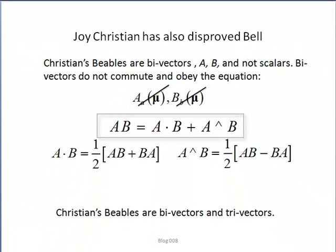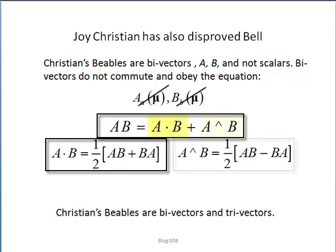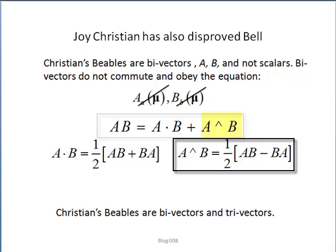Take the product of two and get this equation that exploits symmetry between bivectors in terms of the dot and wedge products defined here. The wedge operator is a generalization of the vector cross product. Whereas scalar beables of Bell's commute, the bivector beables of Christian's on a sphere do not commute. This is an important difference.